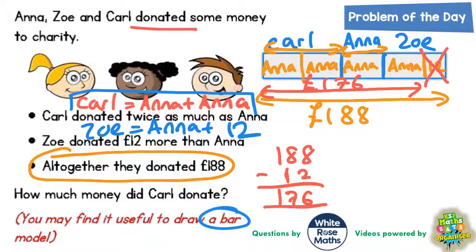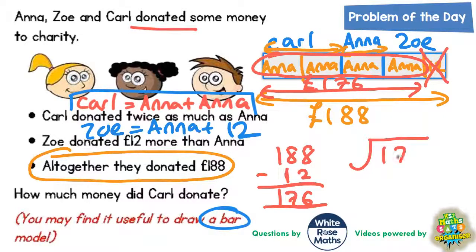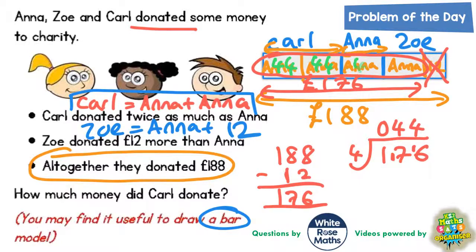The rest of this bar now has four lots of Anna. So if we split £176 into four, we'll figure out what Anna donated. £176 divided by 4: four into 1 won't go, carry it; four into 17 goes four, that's 16 with 1 left over, carry the 1; four into 16 goes four times. So each Anna section of the bar must be worth £44.